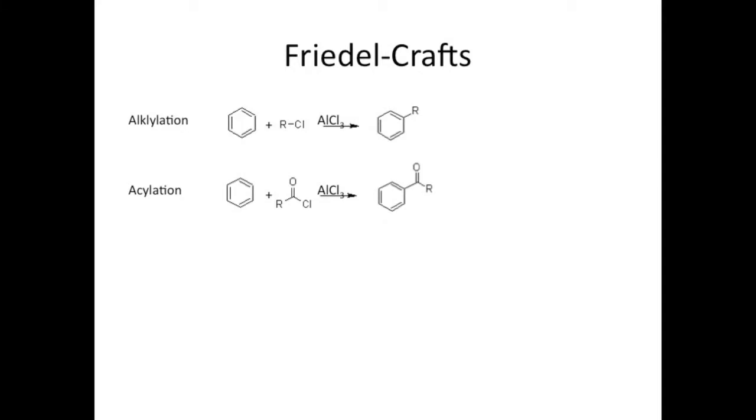As you can see, in alkylation, the R group gets added to the ring, which seems simple enough, but the mechanism of this involves carbocation formation. And whenever you hear that, a little rearrangement light bulb should be going off in your head. If the R group can rearrange to form a more stable carbocation, it will.